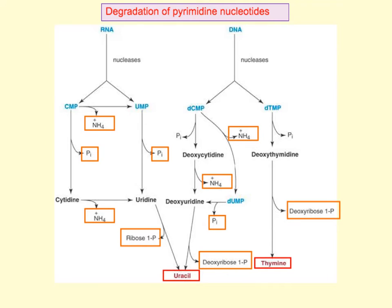Pyrimidine degradation is slightly different. What happens is that pyrimidines are broken down to liberate the ribose phosphate, and the pyrimidine bases are broken free as well.